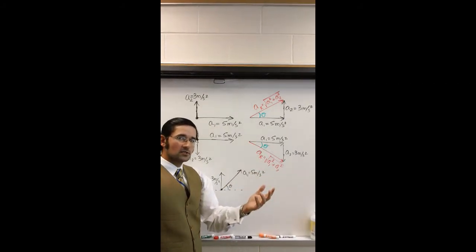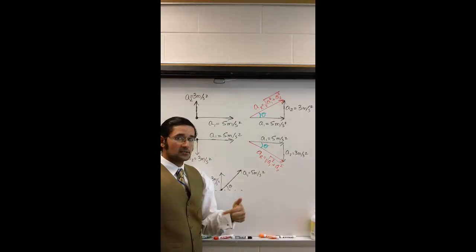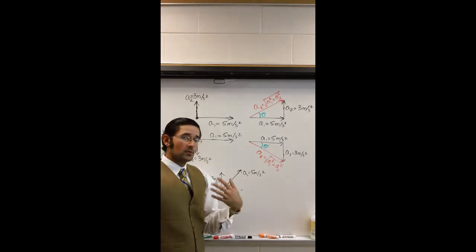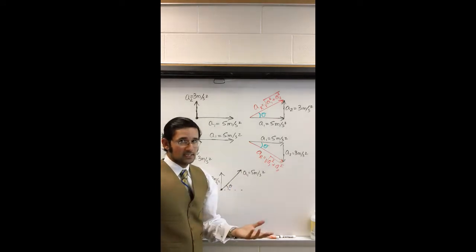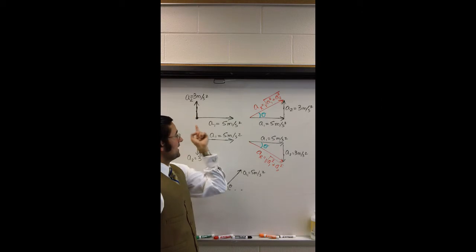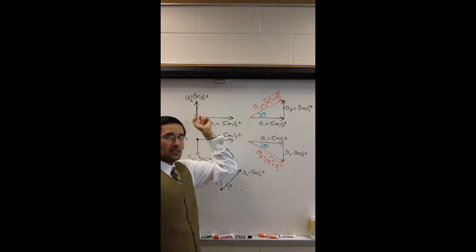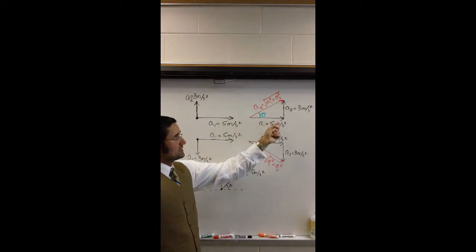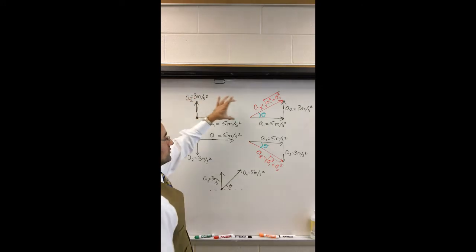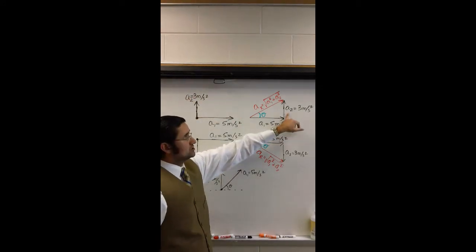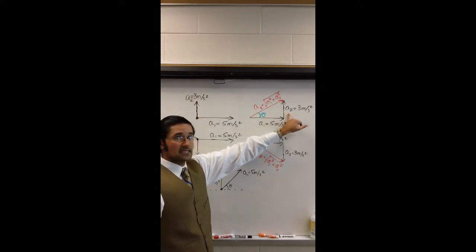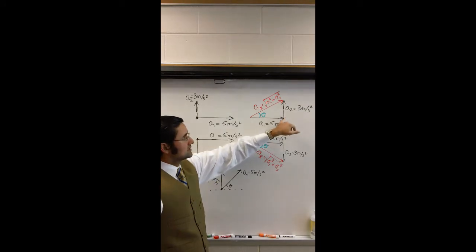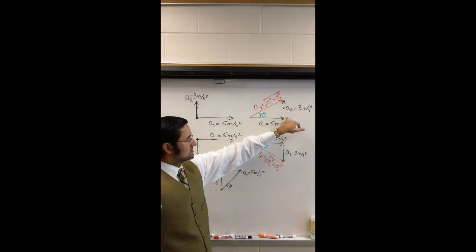The first rule of vector addition is rearrange the vectors head to tail, so that they're touching head to tail. But remember, when you rearrange them, don't change their direction and don't change their size. A1 is 5 meters per second squared. A2 is 3 meters per second squared. So I've rearranged it — I kept A1 where it is, but I picked up A2 and moved it over. I didn't change its direction and I didn't change its size, so they're now touching head to tail.